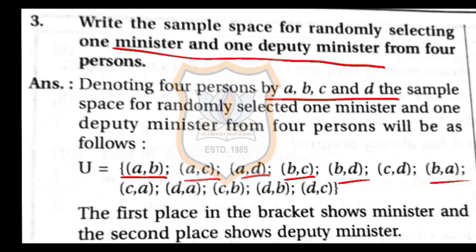Taking D as minister: (D,A), (D,B), (D,C). So in this way you can select 1 minister and 1 deputy minister from 4 persons, and this gives the complete sample space. Note that order matters here, unlike simple combination selection.